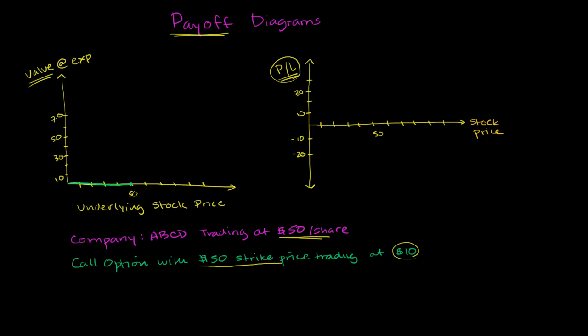Now, if the underlying stock price is worth more than $50, if it's $51, then you would exercise it, because now the option is worth $1. You can buy something for $50 and sell it for $51.